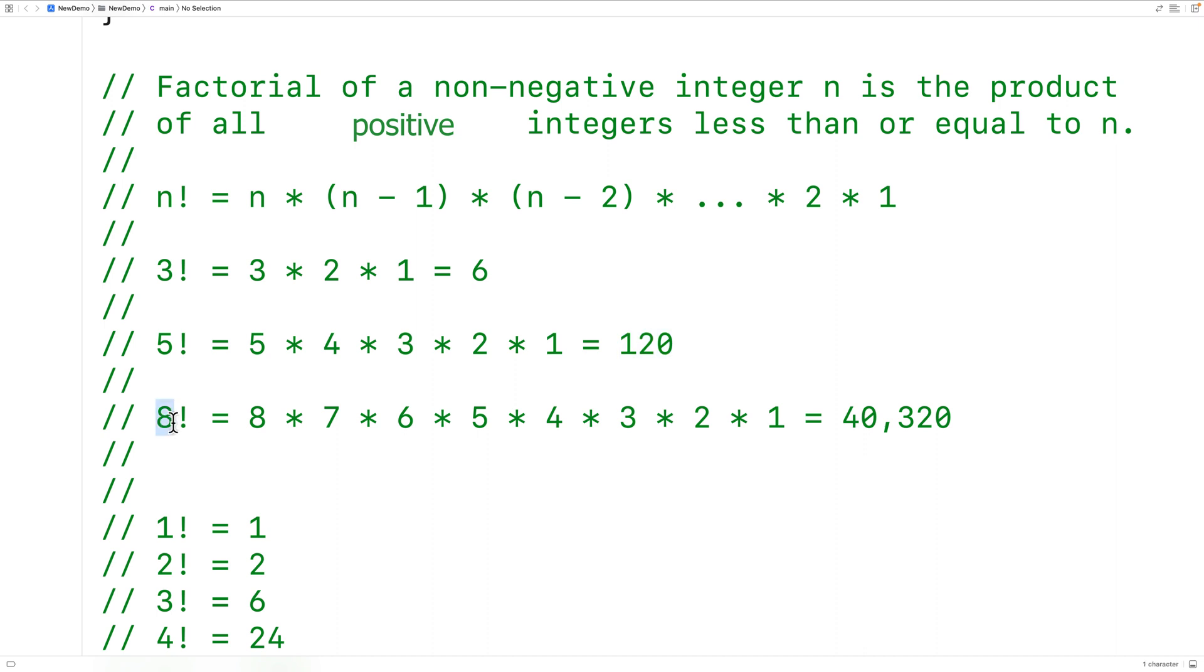The factorial of 8 would be the product of all the integers between 8 and 1, and that would give us 40,320. In general, we can say the factorial of n is going to be n multiplied by n minus 1 multiplied by n minus 2, all the way down to 2 multiplied by 1. So let's write a program to calculate the factorial of a number with a loop.